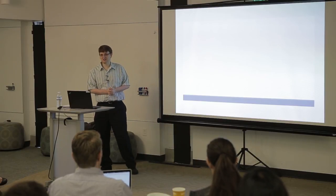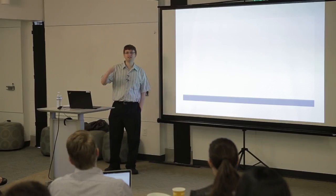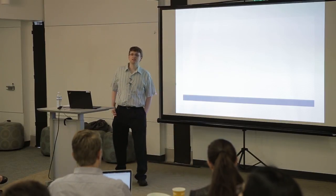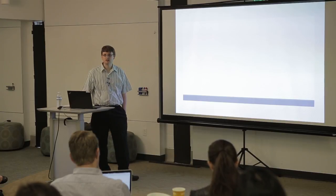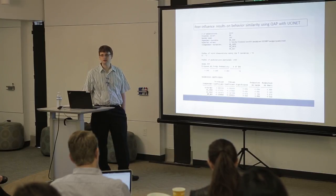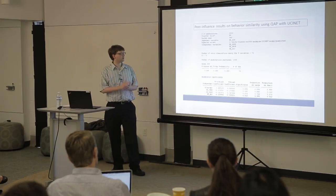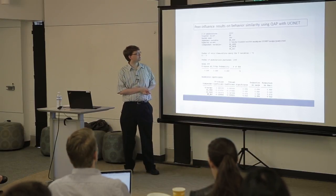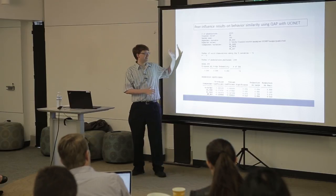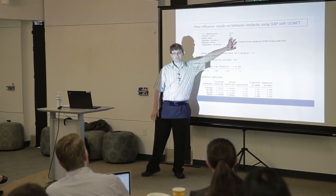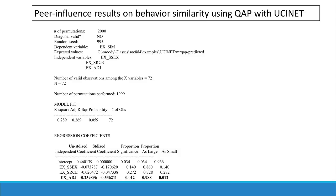I'd be happy to field any questions. Just to go back — can you explain the outcome variable in the last example in more detail? The outcome variable is a similarity in some sort of behavior — say they both smoke. So the question is: what's the chance that two people are going to smoke based on whether they share the same gender, the same race, or whether they just happen to be friends?